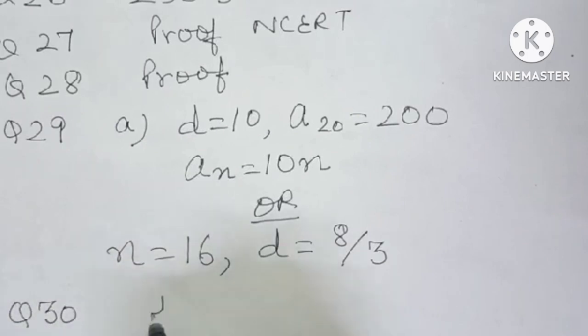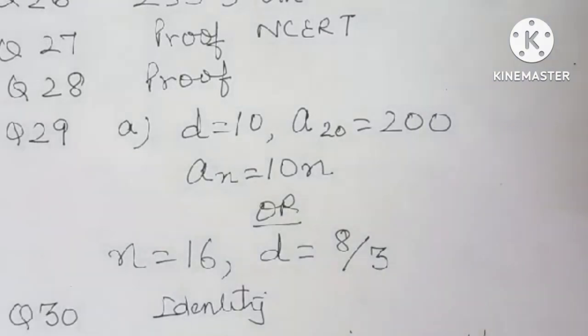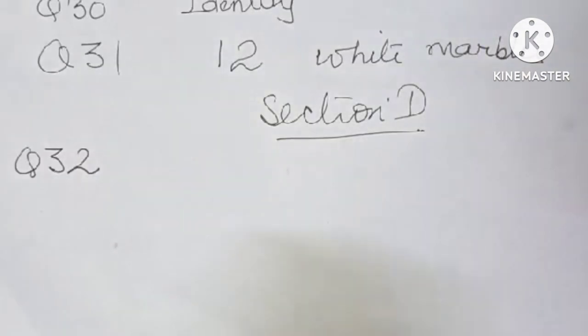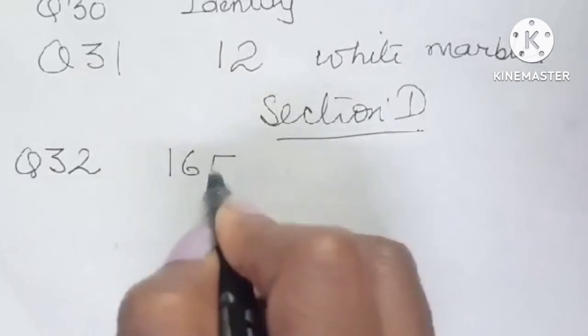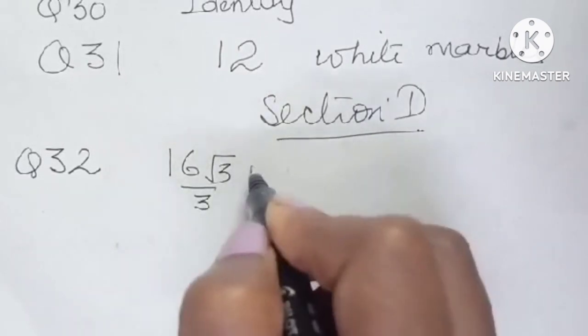Question number 30 is an identity of NCRT. You can do it. Question number 31 is 12. And now let's go to section D. Question number 32, it's 16 root 3 by 3 after rationalization, meters.